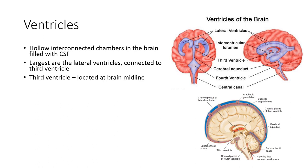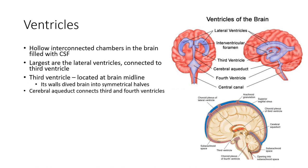The lateral ventricles are connected to the third ventricle, which is located along the brain's midline — running along the dividing line between our two hemispheres. Then we have the cerebral aqueduct, which connects the third and fourth ventricles. The cerebral aqueduct connects the third ventricle to the fourth ventricle, the lowermost.